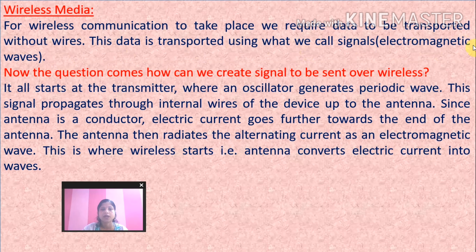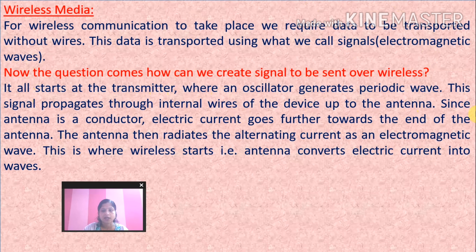Data is transmitted wirelessly using electromagnetic waves. The question is: how can we create signals to be sent wirelessly? It all starts at the transmitter where an oscillator generates a periodic wave. This signal propagates through internal wires of the device up to the antenna. Since the antenna is a conductor, electric current goes towards the end of the antenna, which then radiates the alternating current as an electromagnetic wave.